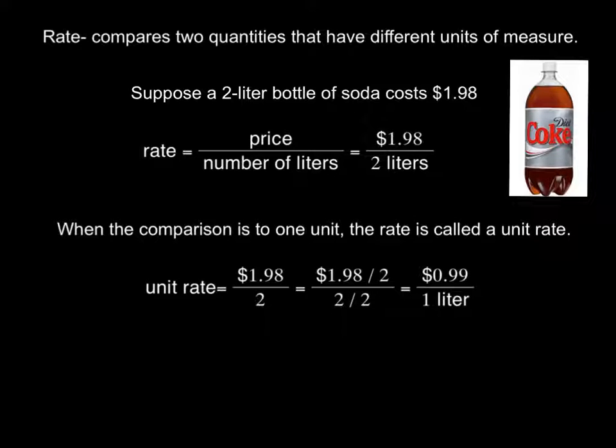Now a rate is different. A rate is going to compare two quantities that have different units of measure. We talked about that - different units. So suppose a 2-liter bottle of soda costs $1.98, and I am wanting to write this as a rate. My rate is going to equal the price of the soda over the number of liters. So we would say it costs $1.98 for 2 liters. When the comparison is to one unit, the rate is called a unit rate. Now these are terms we have to remember. These are our vocabulary words: ratio, rate, unit rate. Our unit rate is when we compare it to one.